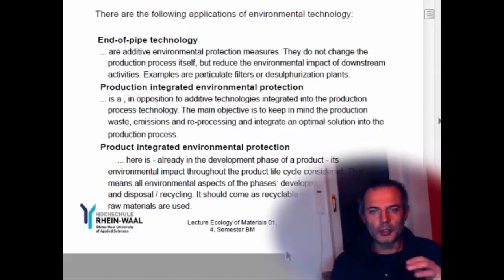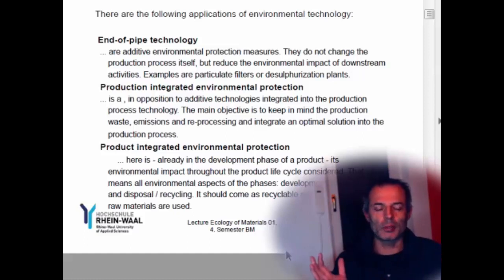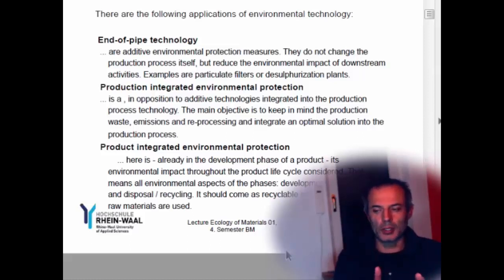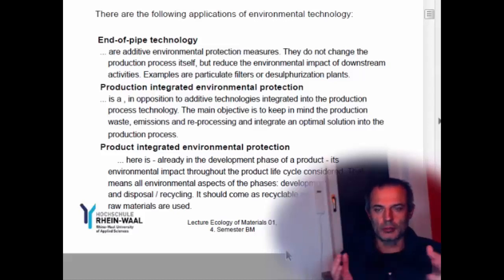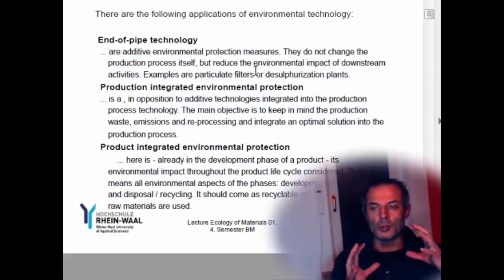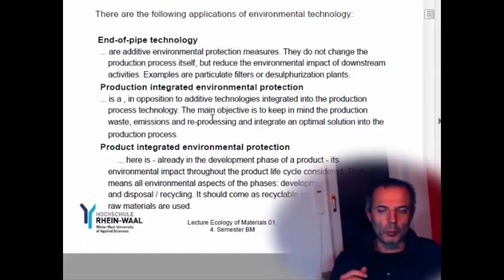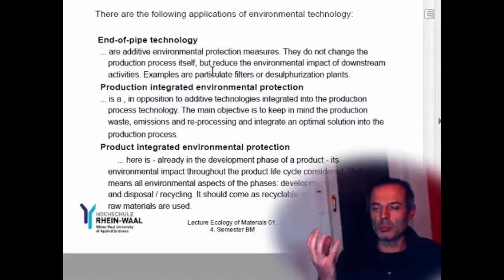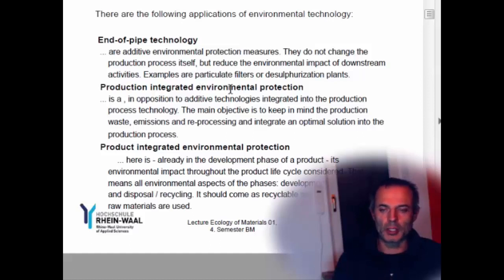That brings us to types of technology. We can have end-of-pipe technology, where we just add something to the end of the pipe. So we have a sewage works — we're making waste, it goes to a sewage work and it is treated in some way. It doesn't change the process itself; it changes the waste by minimizing it. Other examples would be chimney desulfurization on a coal-fired station, or a particle filter on a flour company making a lot of dust — we can filter the dust out of the air. We obviously have to do something with the filter then.